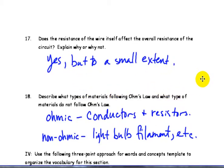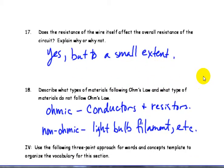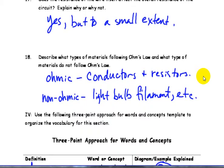Does the resistance of the wire itself affect the overall resistance? Yes, but it's a very small extent. And if we look at ohmic versus non-ohmic, ohmic are conductors and resistors. They obey Ohm's law, what we had on the previous page. Non-ohmic devices do not obey it partially because they're getting degraded as they're being used up. For example, light bulb filaments.